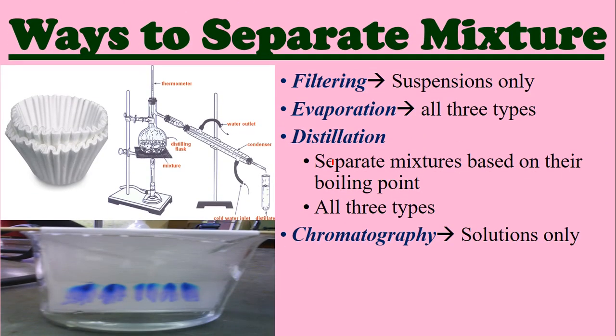We can separate mixtures. Remember, mixtures have to be able to be separated easily — it doesn't mean you can just pick out stuff, that's one way, but there are a couple of ways. Filtering is for suspensions only — like using a coffee filter or how your water is purified. Evaporation works for all three types. Distillation works on all three types and is based off boiling point — side note, distillation is one of the processes used in making alcoholic beverages. And chromatography is for solutions only. You can see in this bottom picture how you can spread out the ink in a pen and see how the colors work out. This is one of the techniques used in forensic science when gathering evidence.